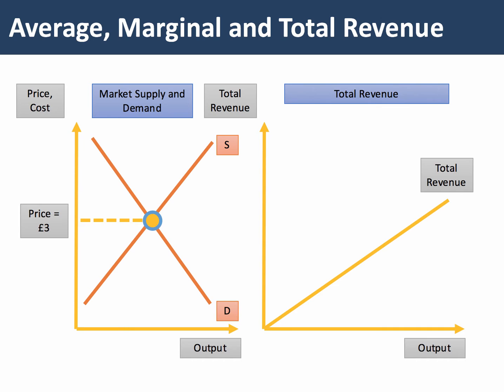They're selling homogenous products, and there are no entry barriers into or out of the market. The key to perfect competition is that the market supply and demand sets the price. For example, in our diagram here, the market price is established at £3.